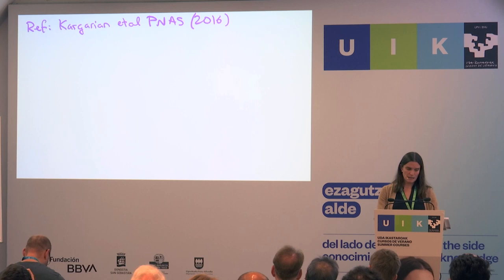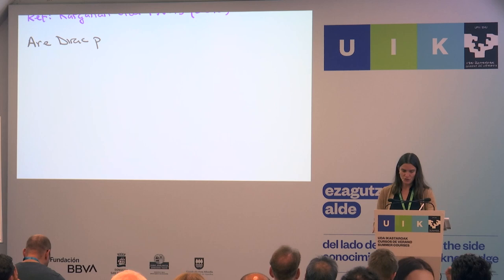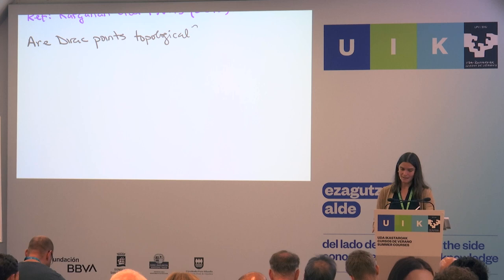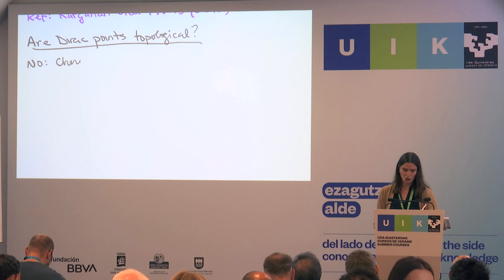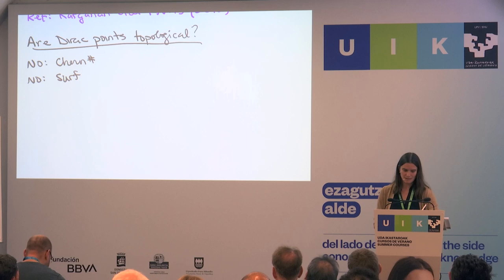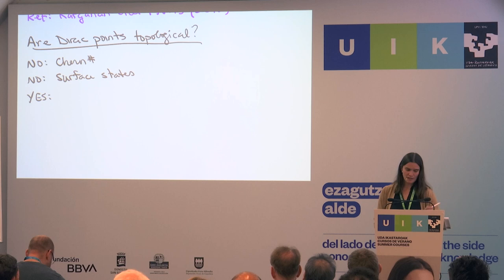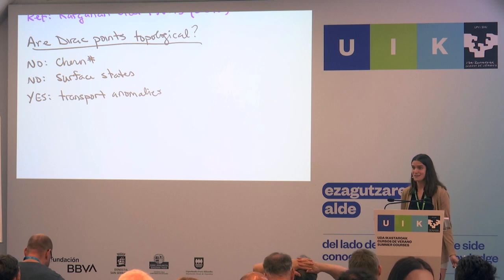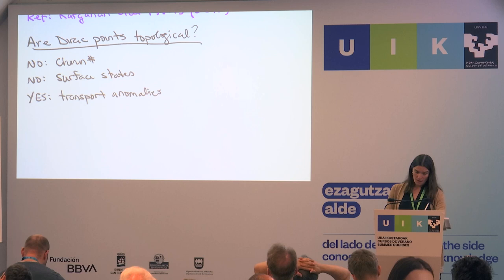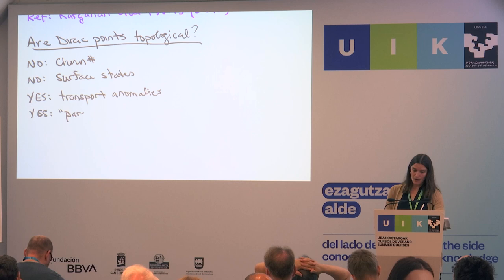The next question is: are Dirac points topological? Is there anything topological left about them? We just showed that they don't have to have surface states. One answer is no, because there's no Chern number. Another answer is no, because there's no surface states that are required. But there are some other answers in favor of yes. One reason is that you can still have some kind of transport anomalies — for example, anomalous Landau levels. Another reason is that Dirac points can be thought of as parents to Weyl fermions: if I have a Dirac fermion and I add a magnetic field, I will split my Dirac fermion and have Weyl points that come out.